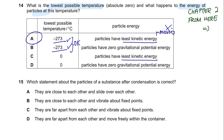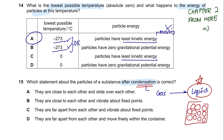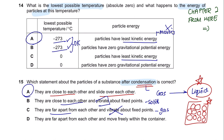Question 15. Which statement about the particles of a substance after condensation is correct? Condensation is the process whereby gas converts into liquid. After condensation we are looking for information about liquid. The particles in the liquid state are close to each other and they slide over each other—so the answer is A. If particles are close and vibrate, that is solid. If they are far apart, that is gas. Gas particles do not vibrate about fixed points. If they are far apart and move freely, that also represents gas.